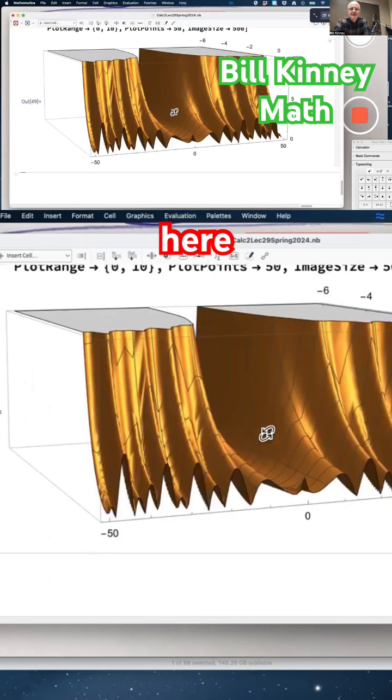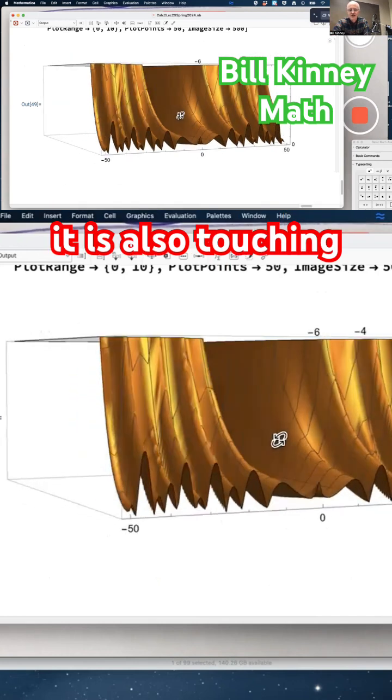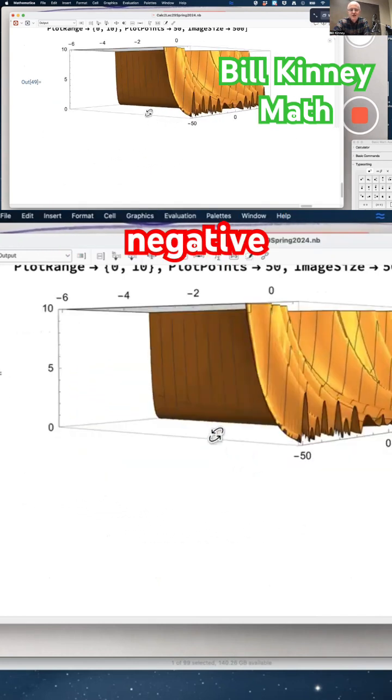Make it bigger here. It's a little hard to see, but it is also touching zero at negative integer values of X back here, but it's kind of close to zero overall over there.